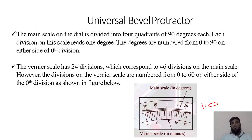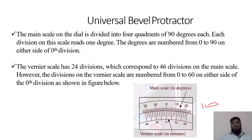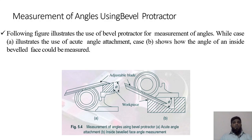Then you check how many minutes to add by finding which vernier scale division exactly coincides with a main scale division. For example, if 30 units correspond, you write 10 degrees 30 minutes. These are the minute scale least counts. There are also some protractors in which you can measure even seconds. For measurement there are two cases: acute measurement — angle less than 45 degrees — and obtuse measurement — more than 45 or more than 90 degrees.